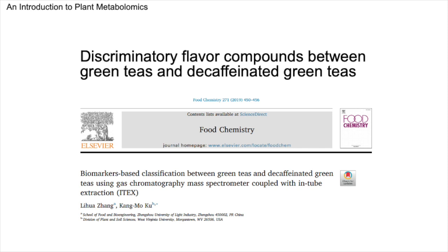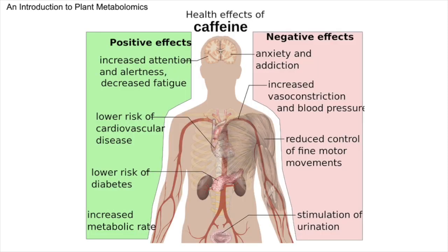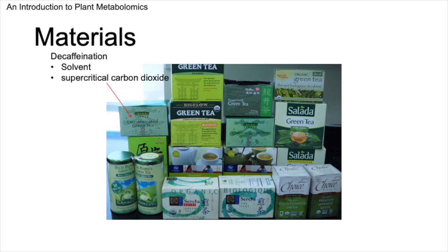The objective of this study is to classify green tea and decaffeinated green teas using volatile organic compounds. As you may know, caffeine is a potent alkaloid compound found in coffee, tea, and cocoa. Although caffeine can enhance attention and alertness, consuming too much can lead to adverse effects. Due to these issues, alternatives such as decaffeinated teas are available in the market. The image shows a selection of commercially available green teas and decaffeinated teas in a store, which I have purchased in bulk for research purposes.